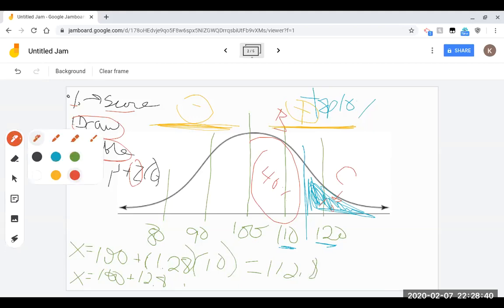And so the answer to the question of what score is associated with the top 10% is 112.8. And my last tip is to always go back and see if that fits in your picture. And remember, we said that it was somewhere between 110 and 120. So 112.8 actually fits quite nicely, and that's going to be the answer to this question.